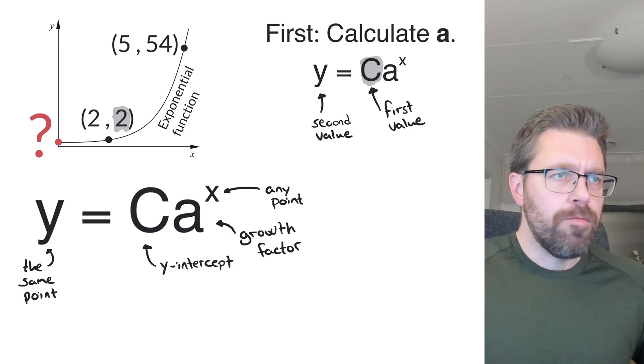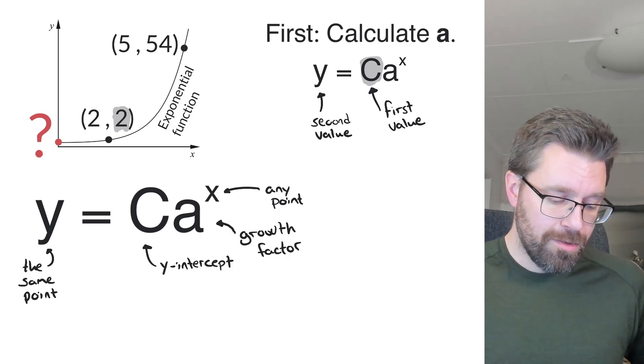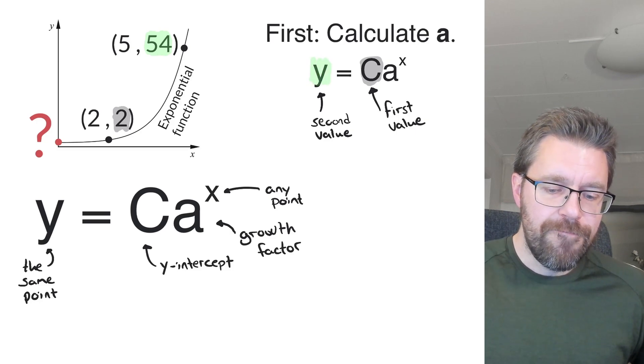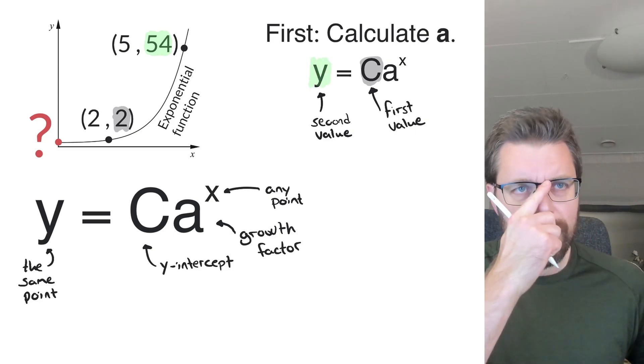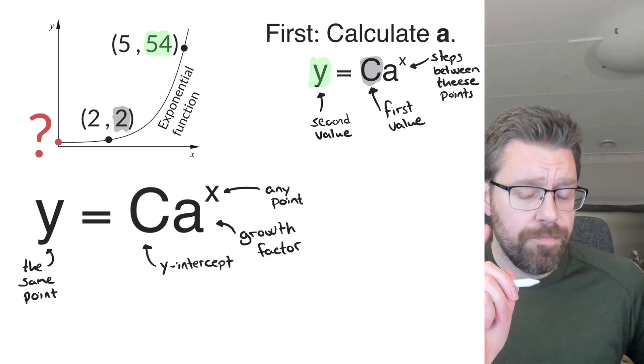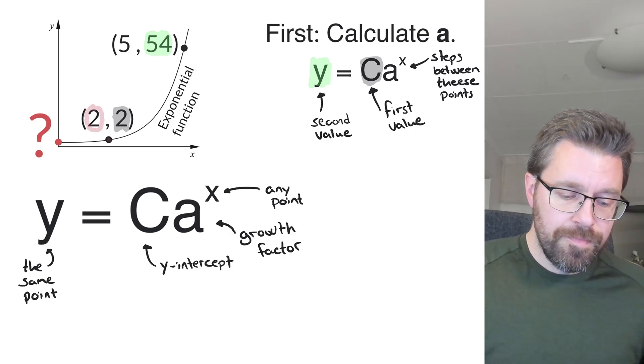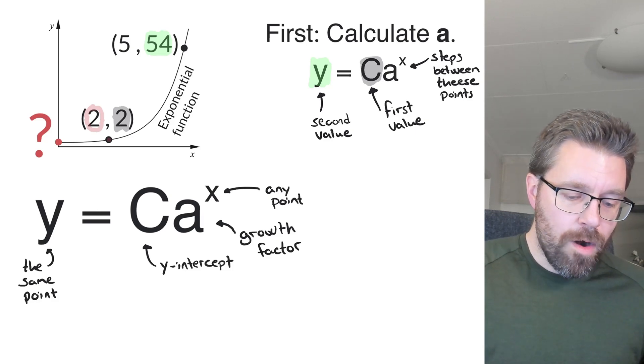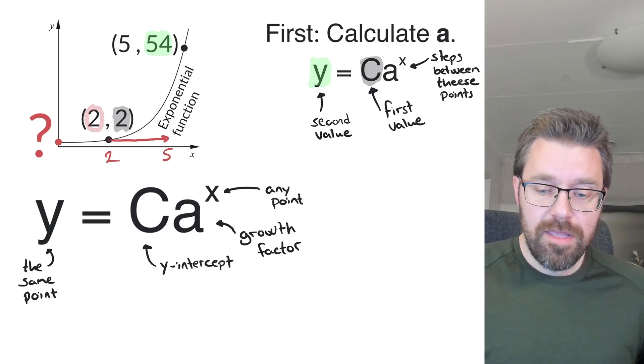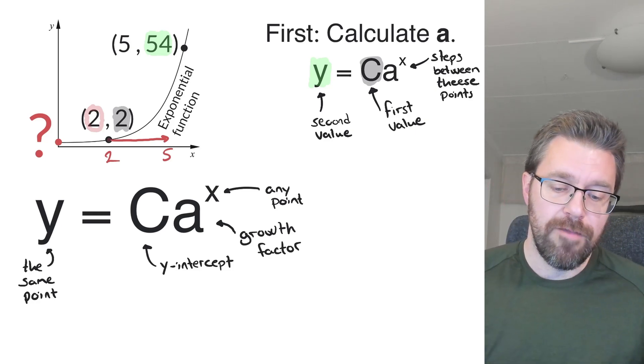y is the second value, the y value of the second point. So which is the second point? It's this one and the value of y equals 54 in this first step. And x is how many steps are between these two points. So when we go from 2 to 5, it's 3 steps. So x equals 3.